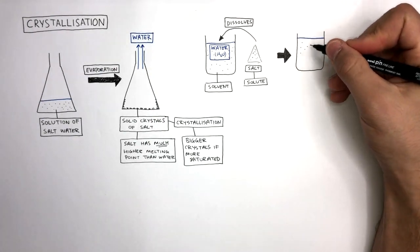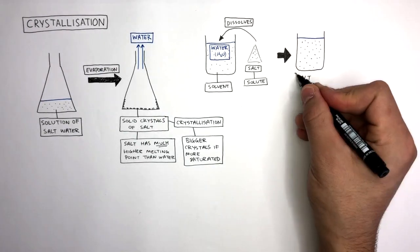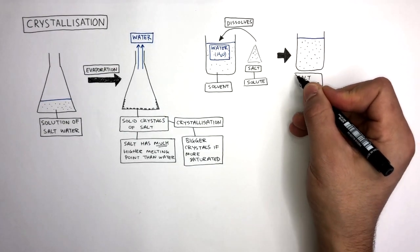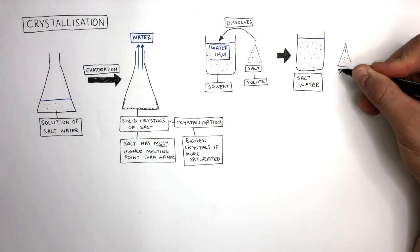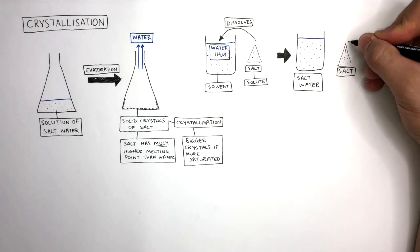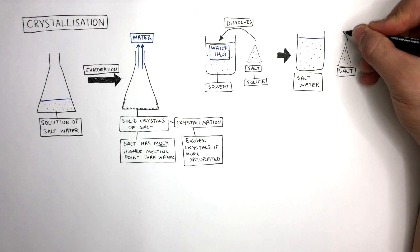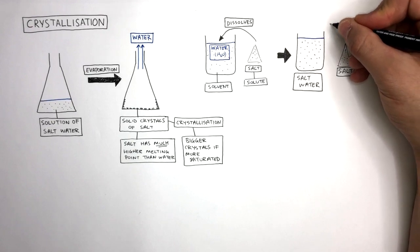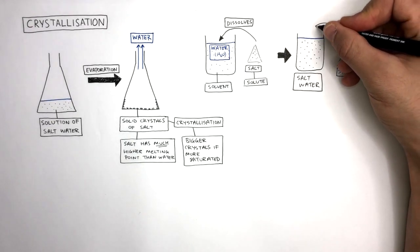Here is our beaker containing a solution of salt water having already dissolved a little bit of salt in the water. So here's some salt and if we keep on adding little by little, initially it does dissolve. We add a little bit more, it still dissolves.